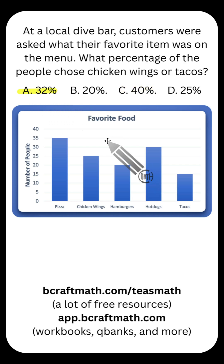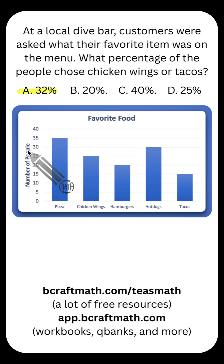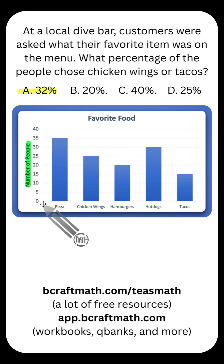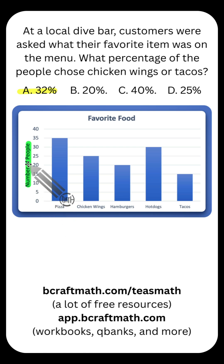We're going to look at two ways: the fast way and then the proportion way. Now what did I mean by sneaky? You have to be careful with what the y-axis represents. It's the number of people, not the percentage of people.